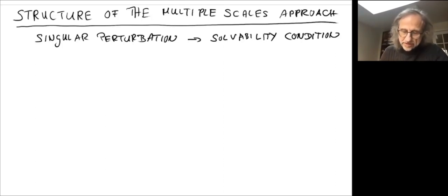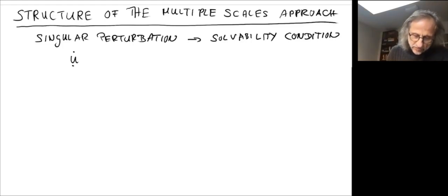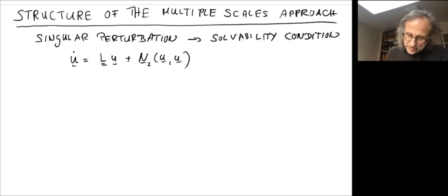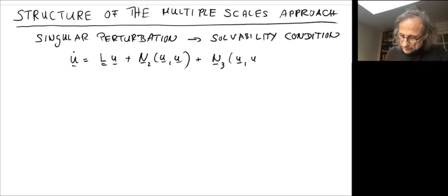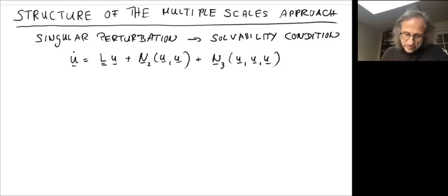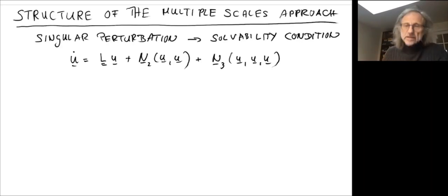Let's phrase it in a more general way. We have a vector u and the evolution equation is given by some linear operator or matrix L. Then there are some nonlinearities — maybe a quadratic nonlinearity N2 and a cubic nonlinearity N3. L is the Jacobian of the linearization around the fixed point u equals zero. The key feature of our expansion is that this L is singular.